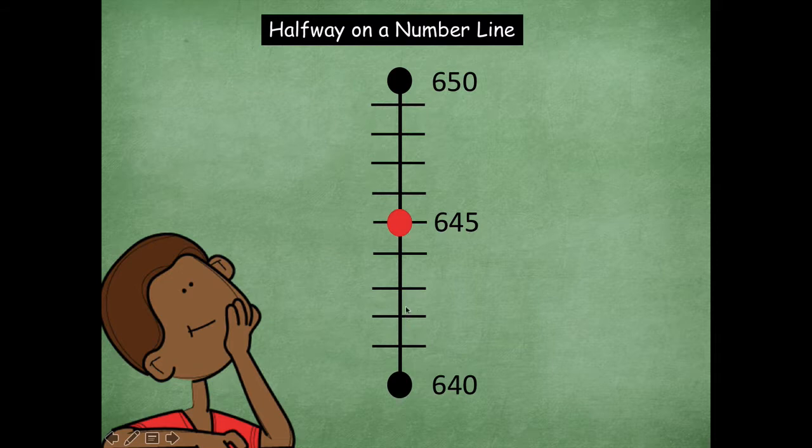Remember you want four tick marks. One, two, three, four on the bottom and one, two, three, four on the top. That's how you know that this right here is the center or the halfway or midpoint on a number line.